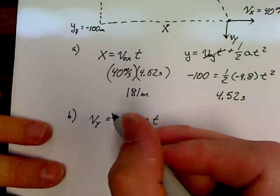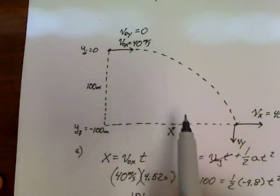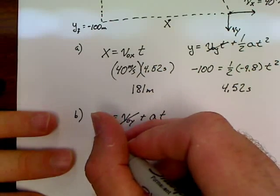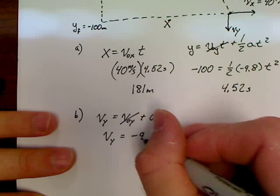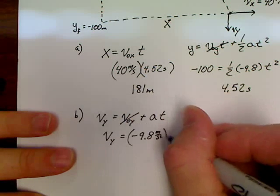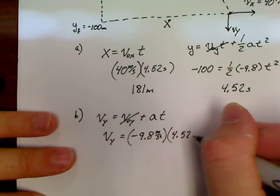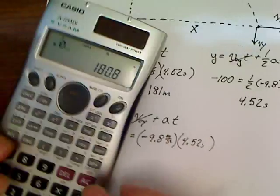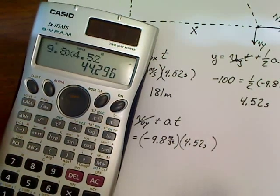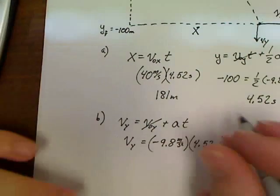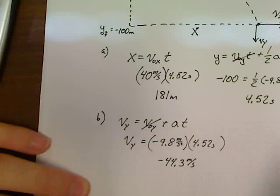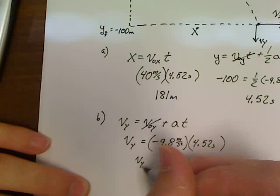VY equals VOY plus a times t. Once again, our VOY was zero for this type of projectile, so that's gone. So VY is equal to negative 9.8 meters per second squared times 4.52 seconds. So let's see if we can do this. 9.8 times 4.52, 44.3. So we've got a negative 44.3 meters per second velocity, and that's our VY component.